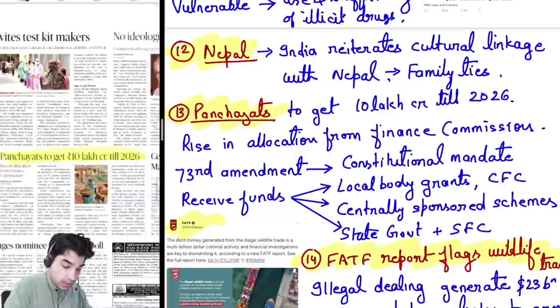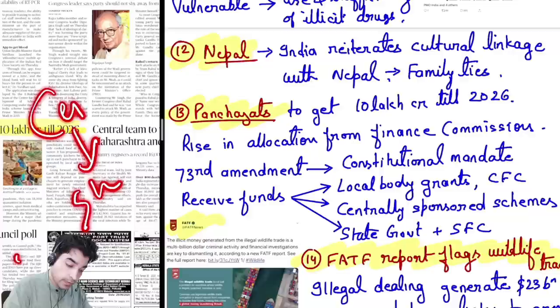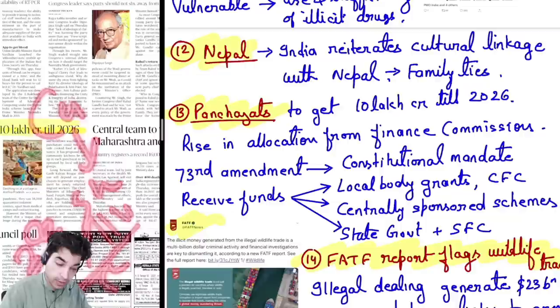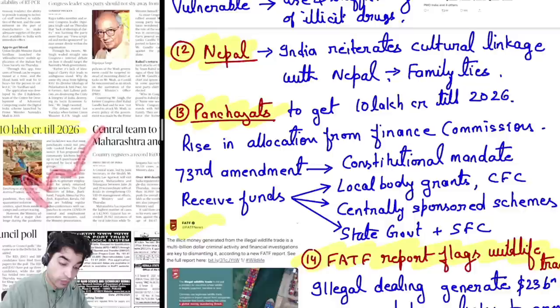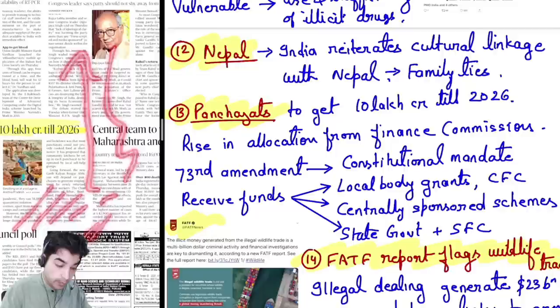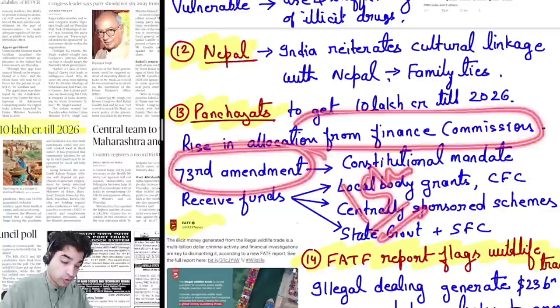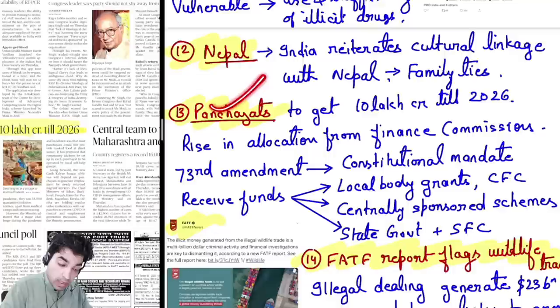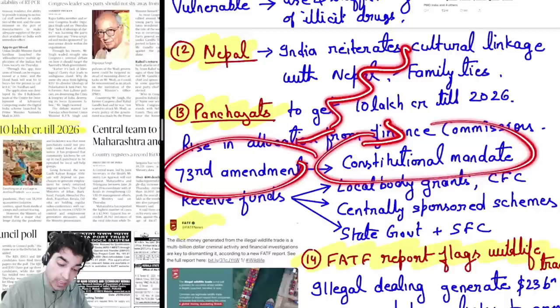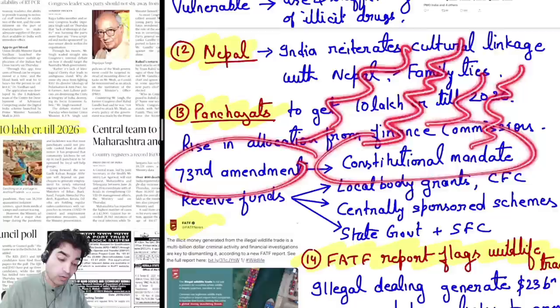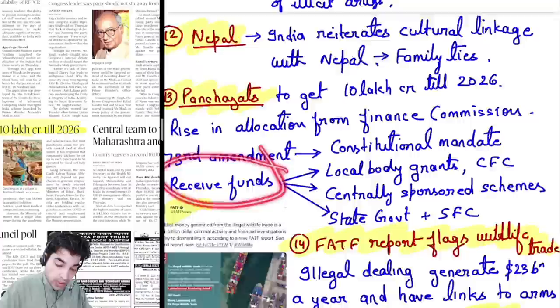Thirteenth news: panchayats are to get ₹10 lakh crore till 2026. India has the Centre, then 28 states, and then the third tier — Panchayati Raj. The 73rd Amendment gave constitutional mandate to panchayati raj — decentralized form of government. Before that, many committees came, like Balwant Rai Mehta Committee. The 73rd Amendment provided constitutional provisions for how panchayats would work, their mandate, voluntary features, and all related aspects.